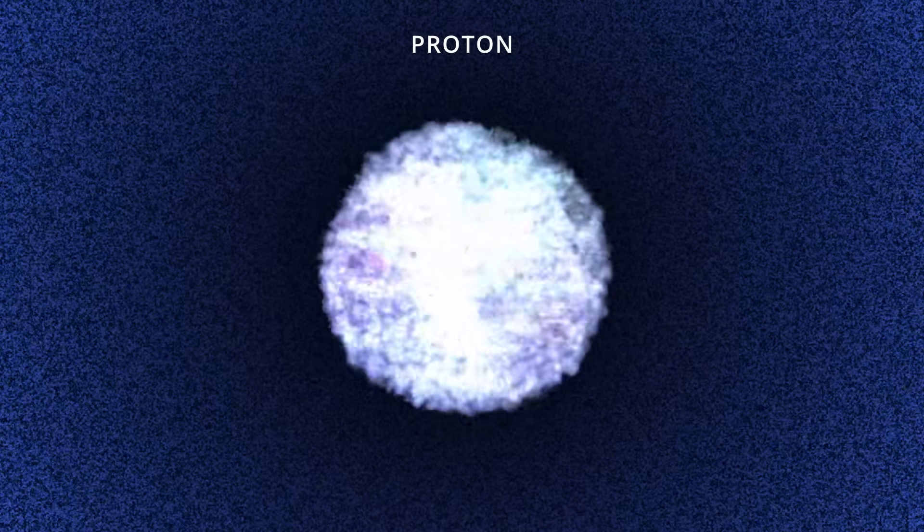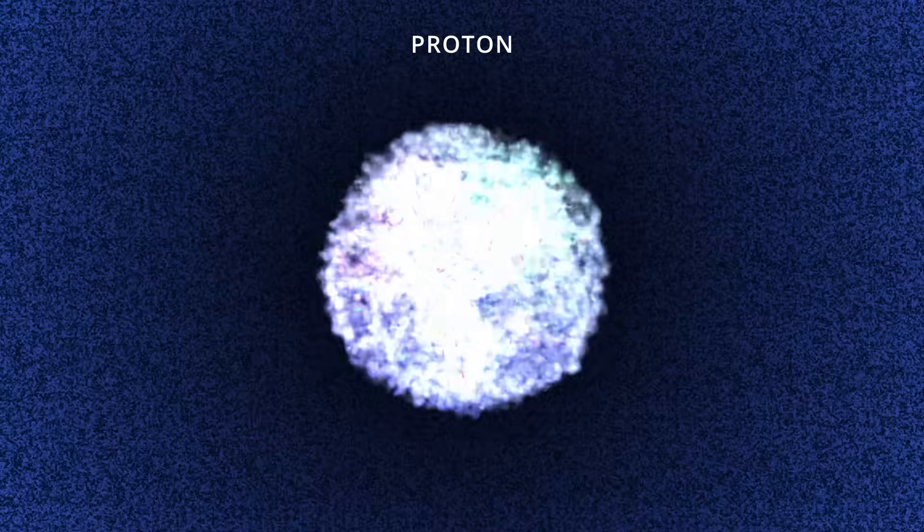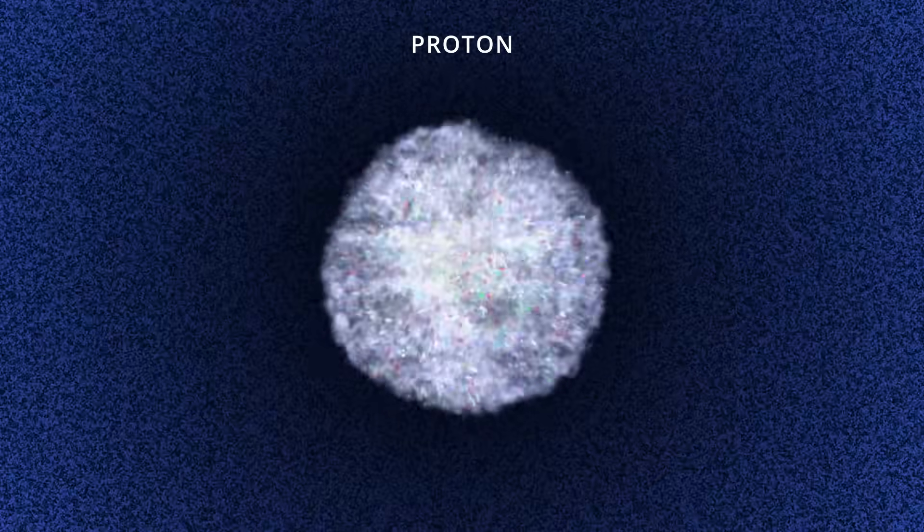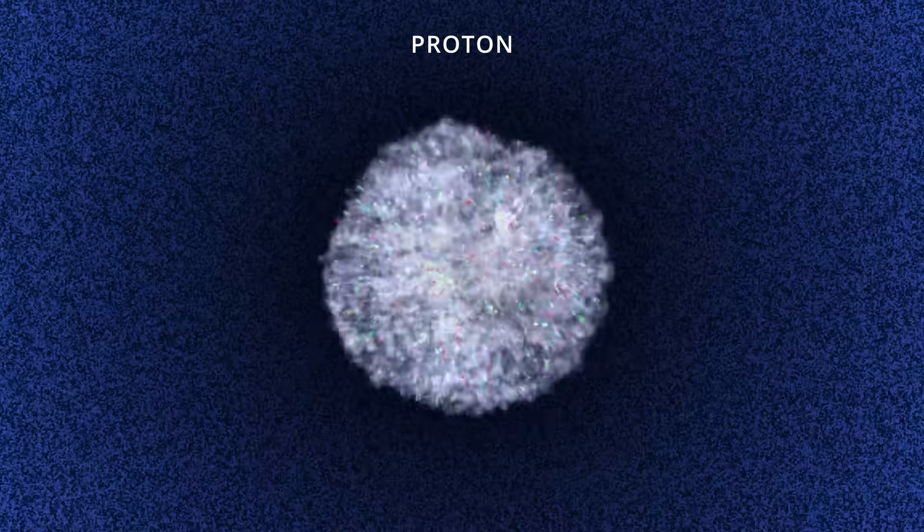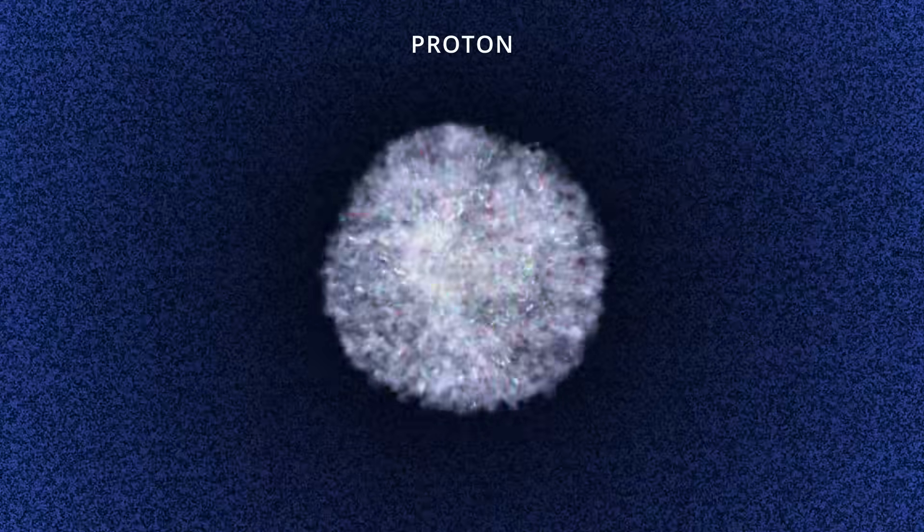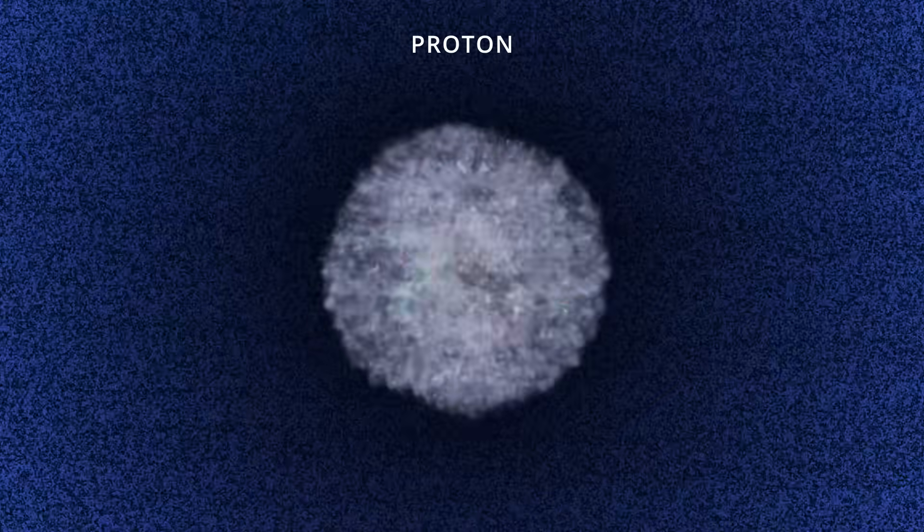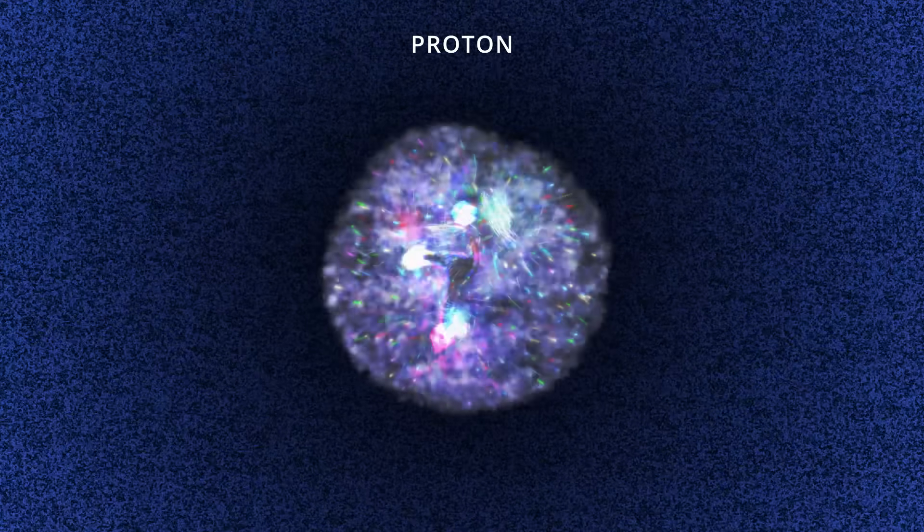At a high shutter speed, we see an ocean of gluons. At a medium shutter speed, we see a sea of gluons and quark-antiquark pairs. And at a low shutter speed, we see the dominance of the valence quarks.